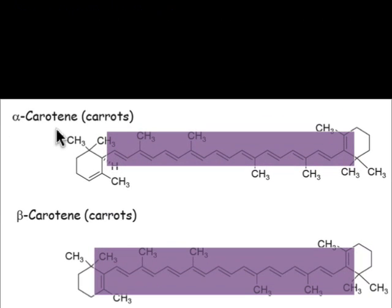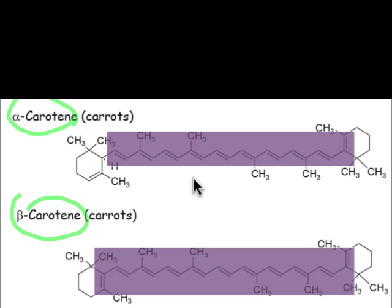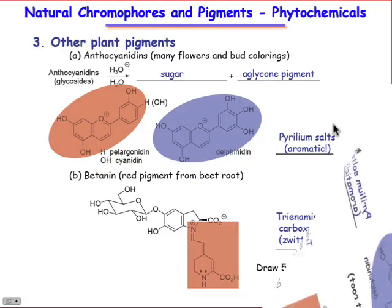Carrots also have a rich color, and they're due to alpha-carotene and beta-carotene — very similar structures that are shown here, differing only in the presence of an sp3 hybridized carbon, versus another double bond in the case of beta-carotene.